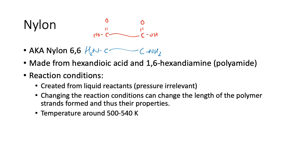The reaction conditions: nylon is created from liquid reactants, so pressure is irrelevant. Changing the reaction conditions can change the length of the polymer, so different conditions give different chain lengths. The number of monomers depends on the reaction conditions, and the temperature is around 500 to 540 K.